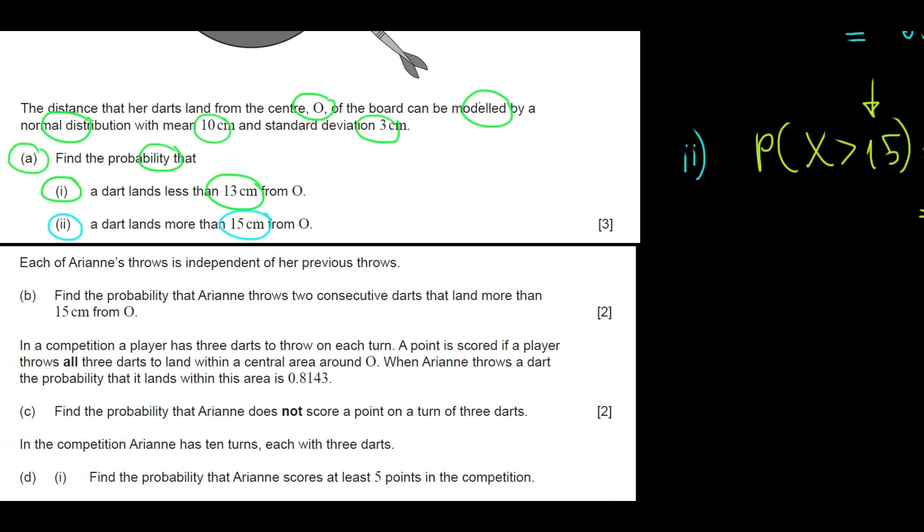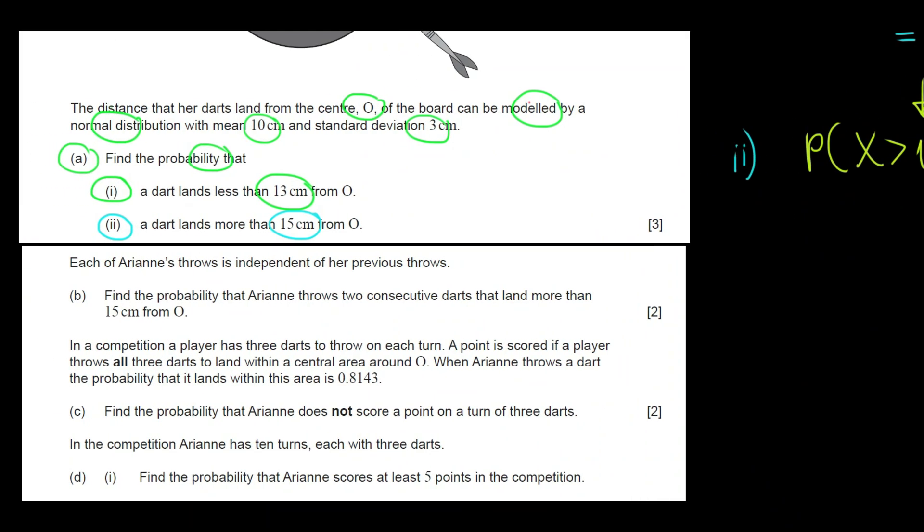So that's another one done. Let's carry on. Question B: Each of Ariane's throws is independent from the previous throws. Find the probability that Ariane throws two consecutive darts that land more than 15 centimeters from O.